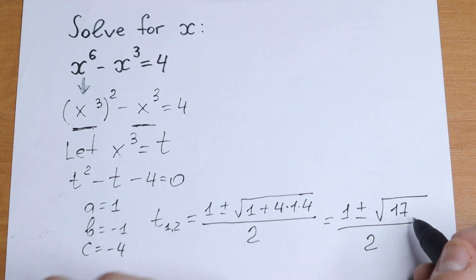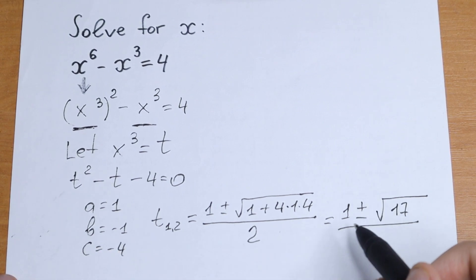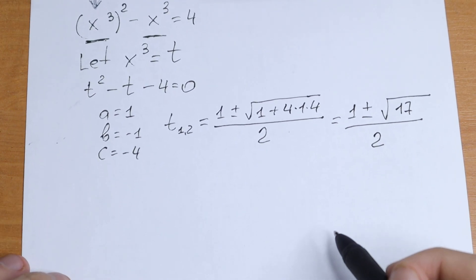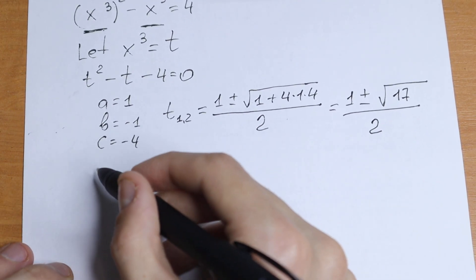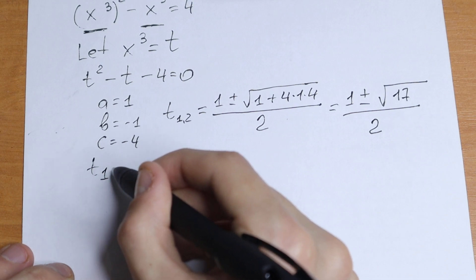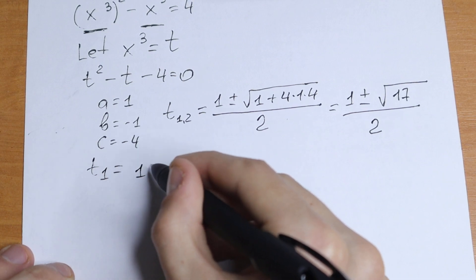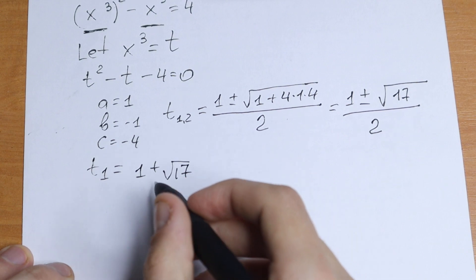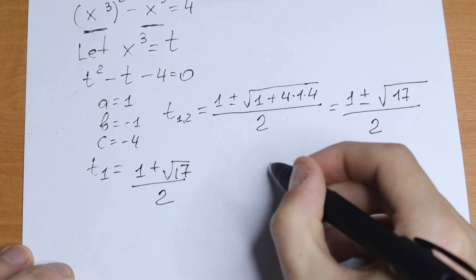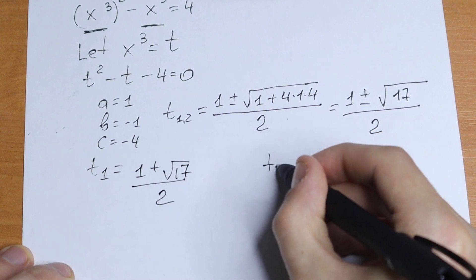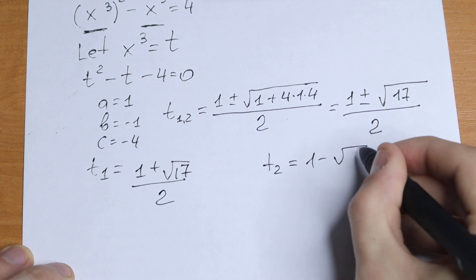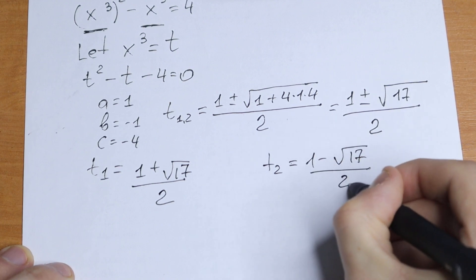So we will have two roots: 1 plus or minus the square root of 1 plus 16, which is the square root of 17, all over 2. The first root t₁ equals 1 plus square root of 17 over 2, and the second root t₂ equals 1 minus square root of 17 over 2.